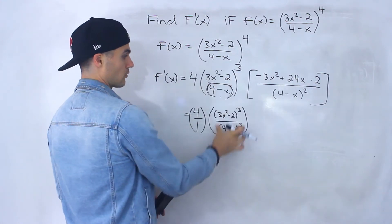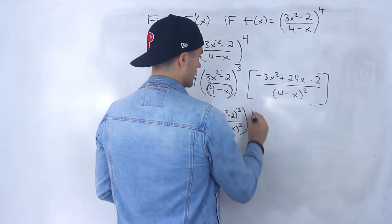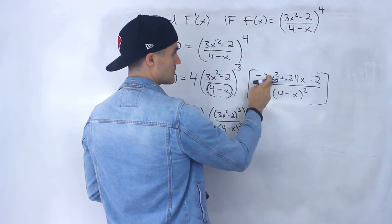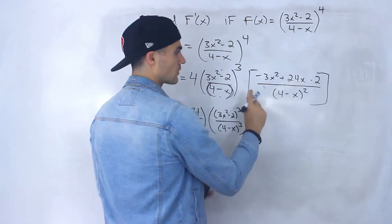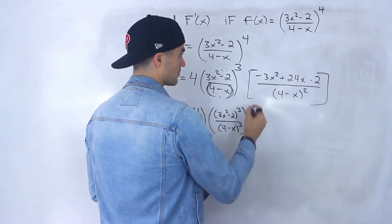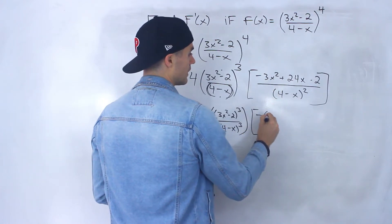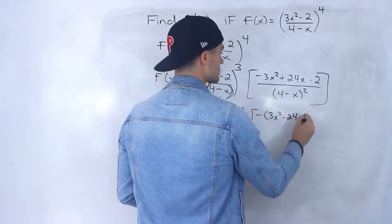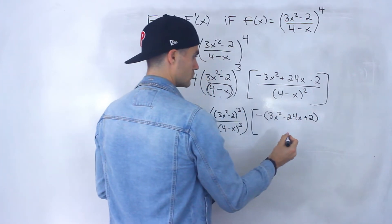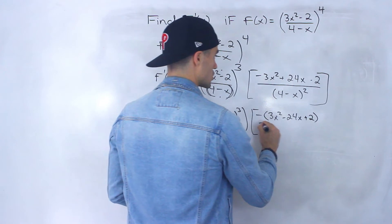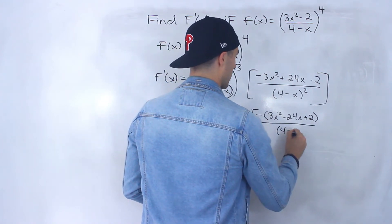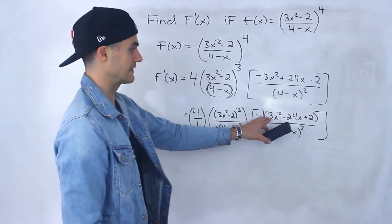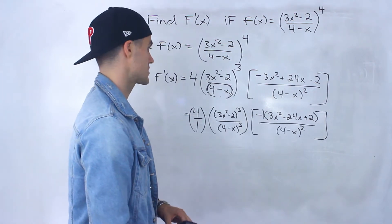So I rewrote that part. And then this other piece, just to make it look a little nicer — this is personal preference — I'm going to factor out a negative in the numerator. So all the signs change and we'll end up with 3x squared minus 24x plus 2, all over 4 minus x to the power of 2. I just factored out a negative 1 there to make the leading coefficient positive.